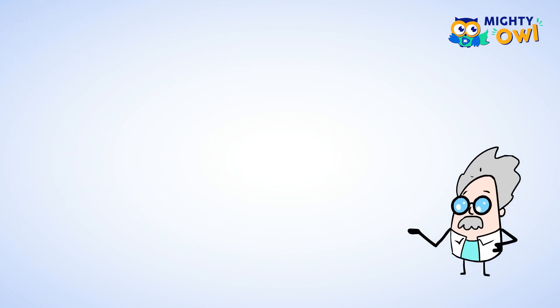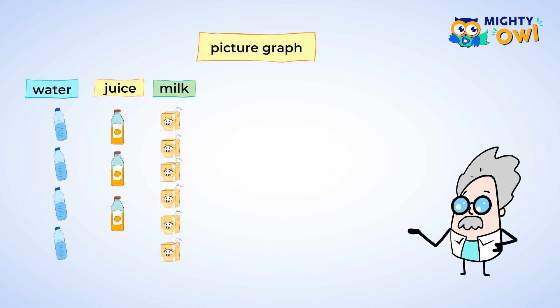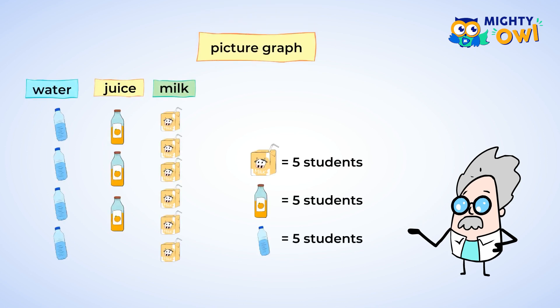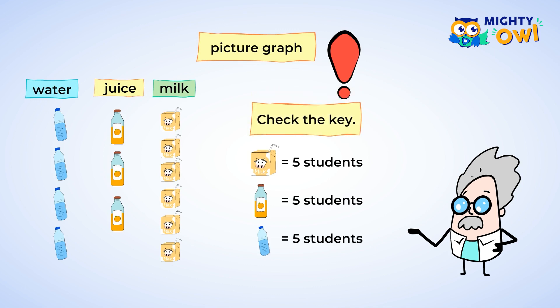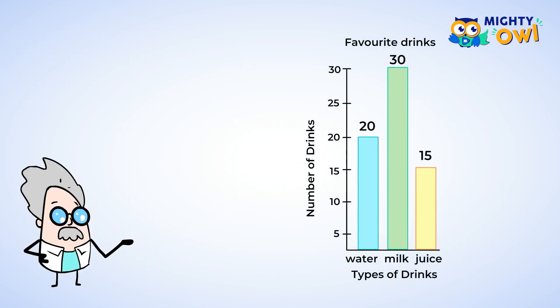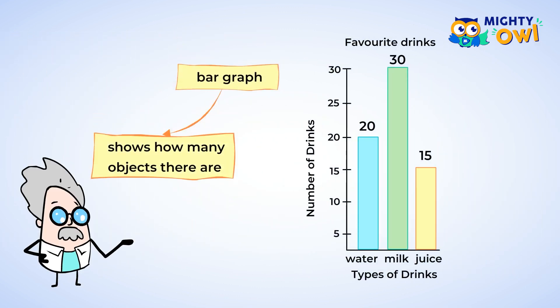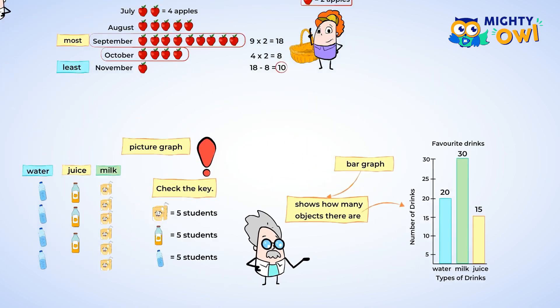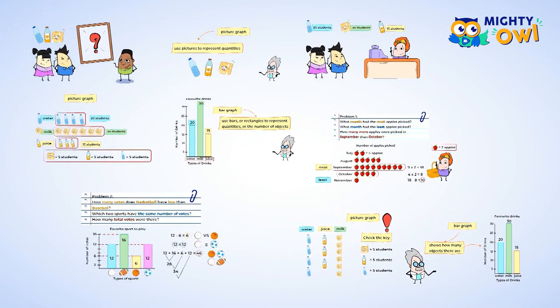Now let's sum up all that we learned. We learned about picture graphs and how they use pictures to represent how many objects there are. Always remember to check the key to know how many objects each picture represents. Next, we learned about bar graphs, and we saw how they use bars to show quantities, or how many objects there are. Excellent work! I'm excited for the next lesson. Let's go!